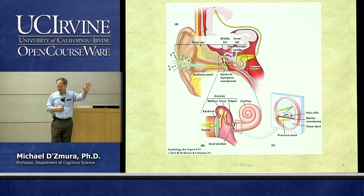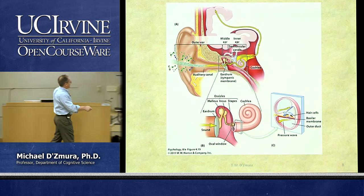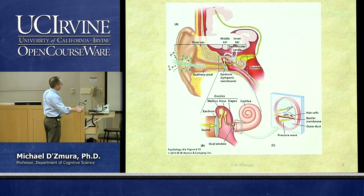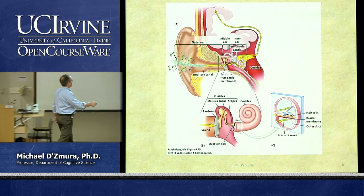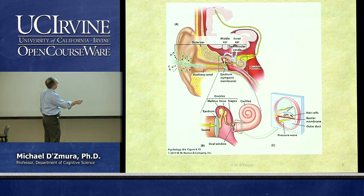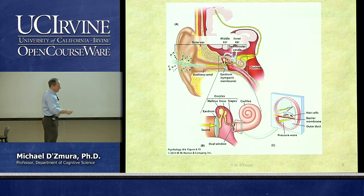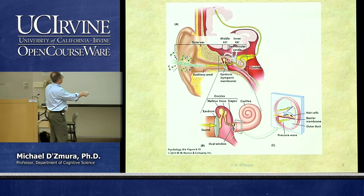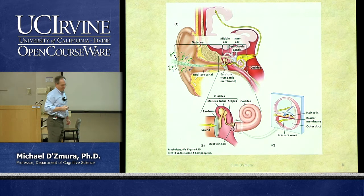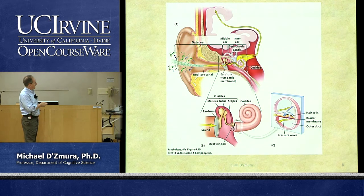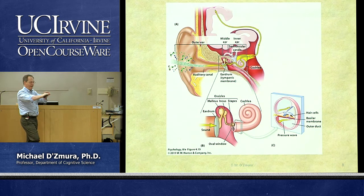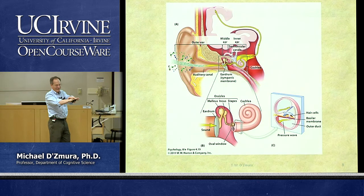If we take a cross section of the cochlea, we find it's a fairly complicated structure — a tube here, a tube there, and between the two tubes we find the primary sensory organs: hair cells lying in a structure known as the organ of Corti, which sits on top of the basilar membrane. The basilar membrane is a sheet that travels the length of the cochlea from the base up to the apex. The pressure waves move from base to apex, vibrating the basilar membrane, and sitting on top of it are the hair cells, also vibrating in consequence.